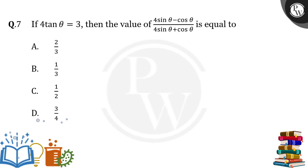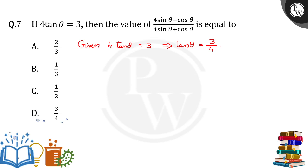Hello everyone. If 4 tan θ = 3, then the value of (4 sin θ − cos θ) / (4 sin θ + cos θ) is equal to how much? The given value is 4 tan θ = 3, so from this we can find tan θ: tan θ = 3/4.